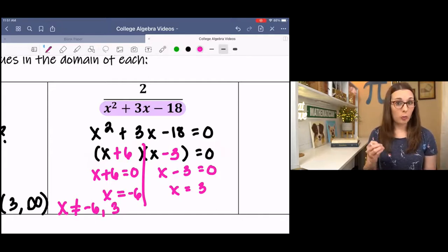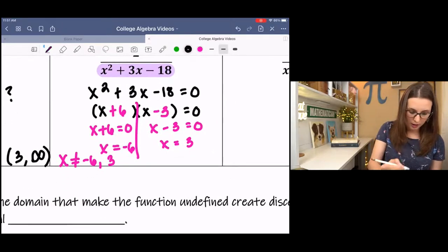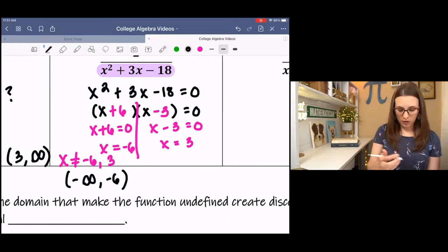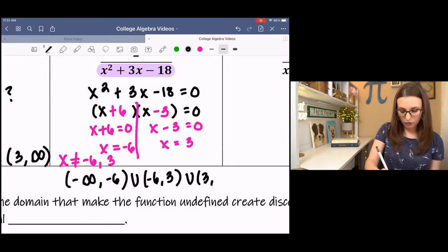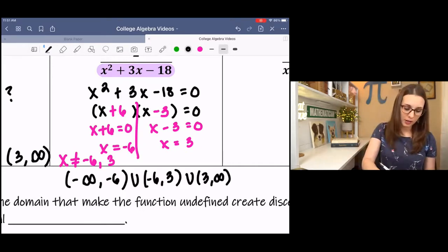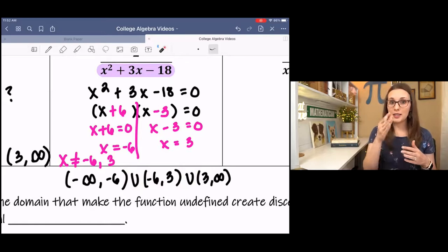If it's asking for the domain, then we would extend that and say it goes from negative infinity to negative 6, and then we jump in the graph, negative 6 to 3, and then we jump in the graph, 3 to infinity. So it's kind of broken up, and these little breaks indicate a place in the graph where it's undefined, and it's going to create a discontinuity in our graph, a jump, if you will.